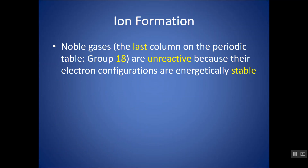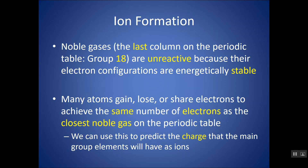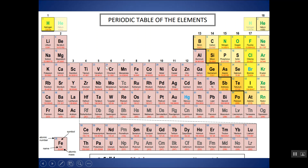So why do metals form positive ions and non-metals form negative ions? Essentially, most elements are trying to get the same number of electrons as the noble gases. The noble gases are the last column on the periodic table — group 18. They're very unreactive because their electron configuration is very stable, so they don't tend to gain or lose electrons, and therefore they don't tend to react. There's something called the octet rule — atoms tend to gain, lose, or share electrons to achieve the same number of electrons as the closest noble gas on the periodic table.